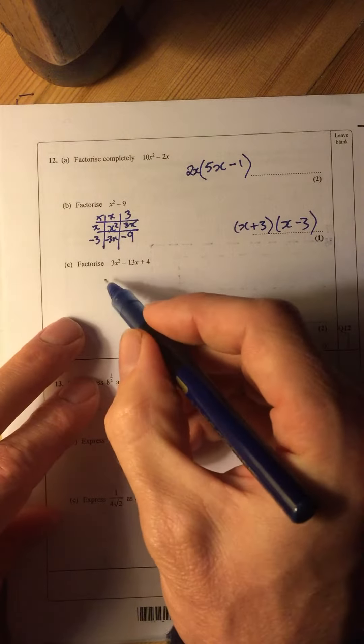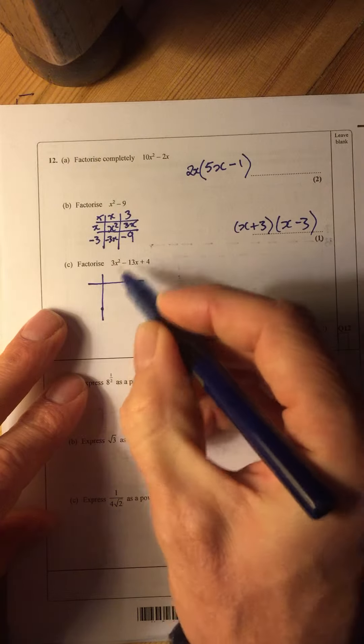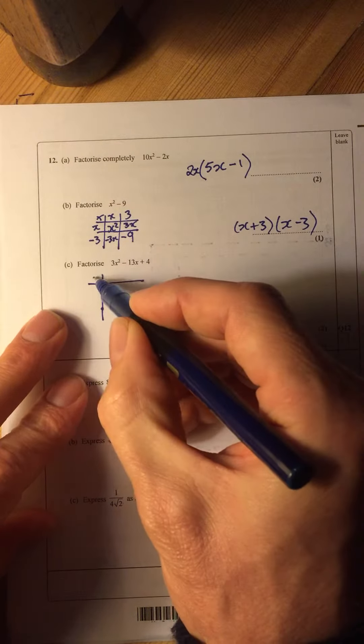Now we move on to this one, which is factorising a slightly trickier factorisation because it's got 3x squared.